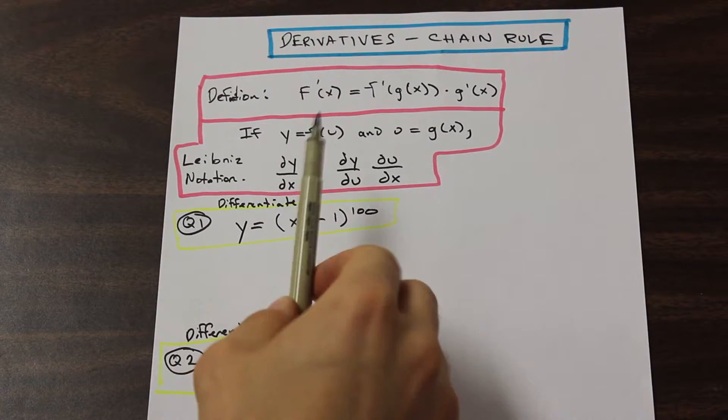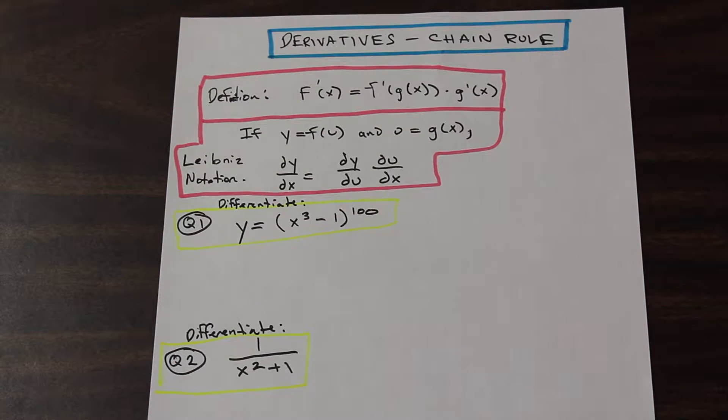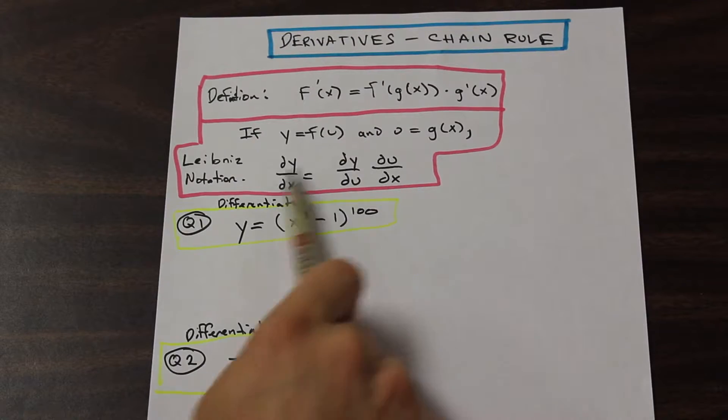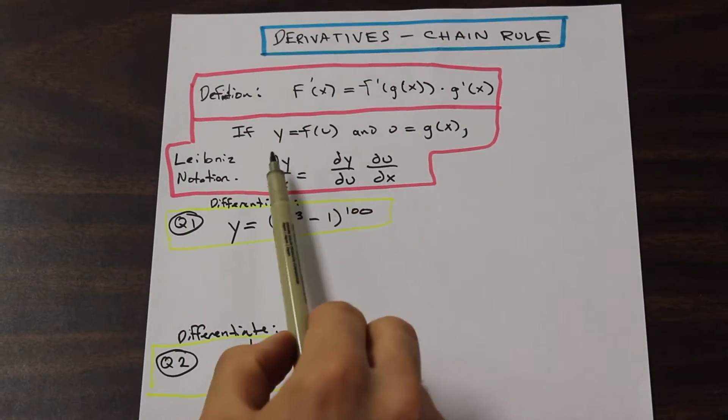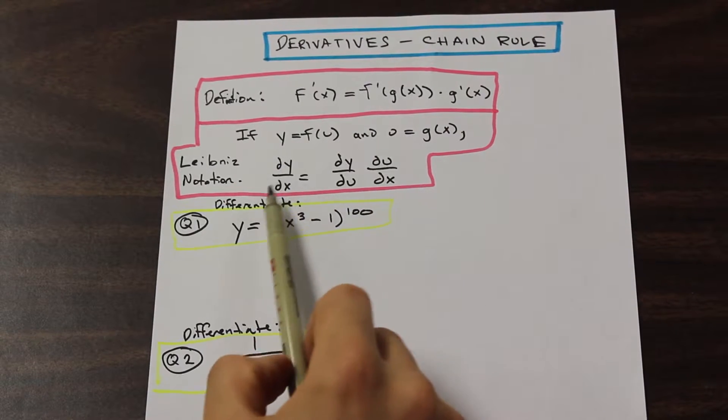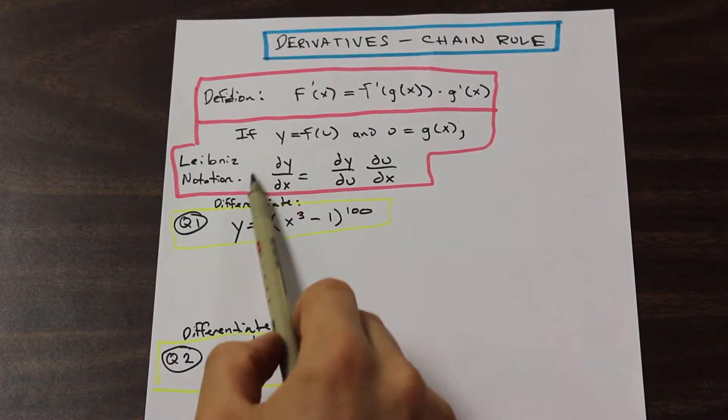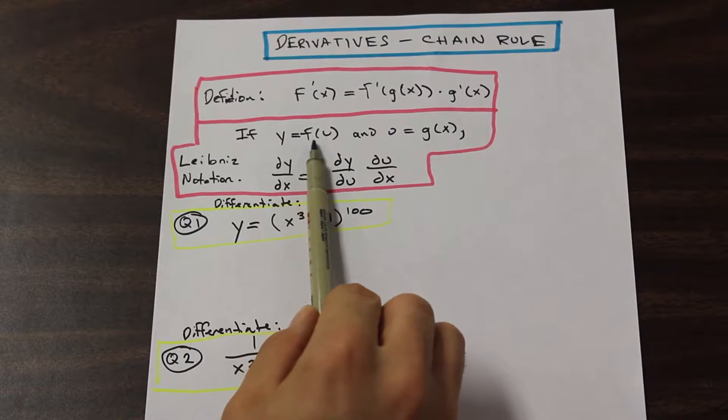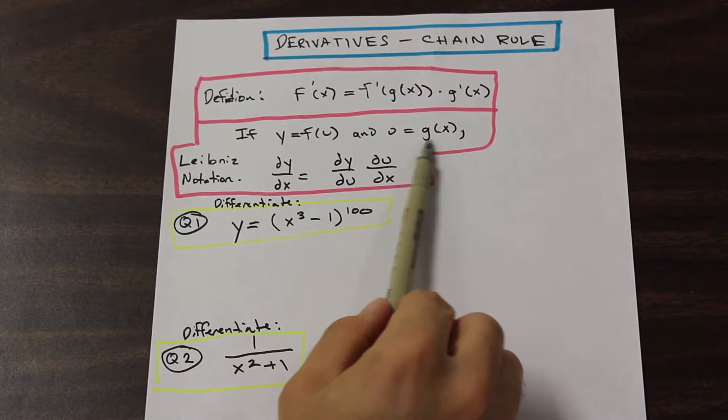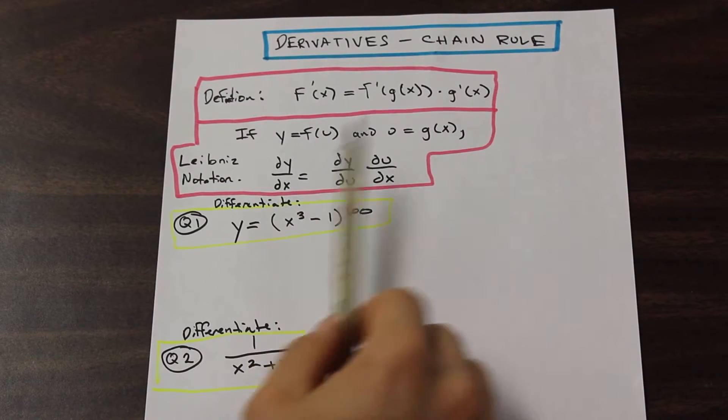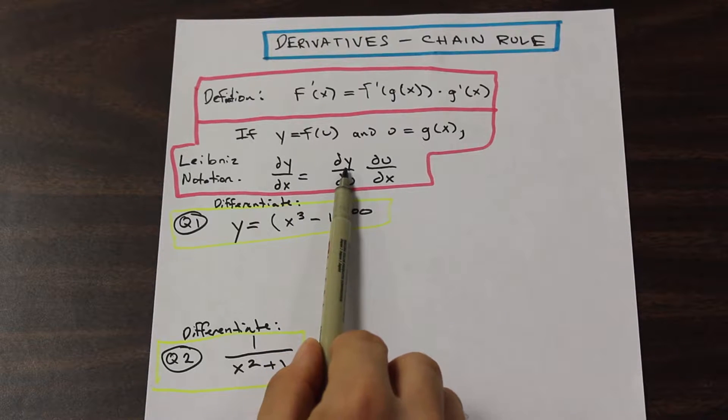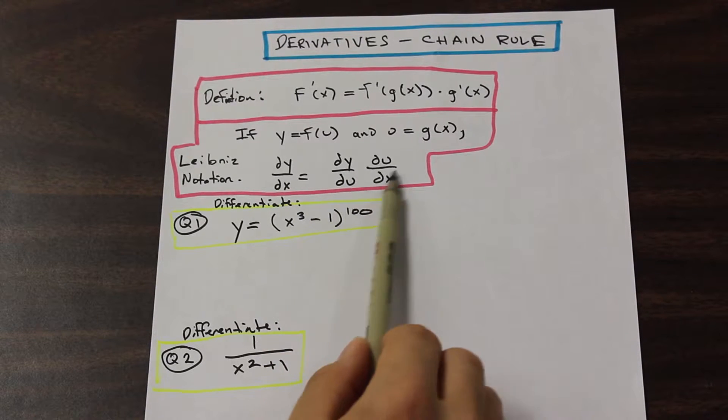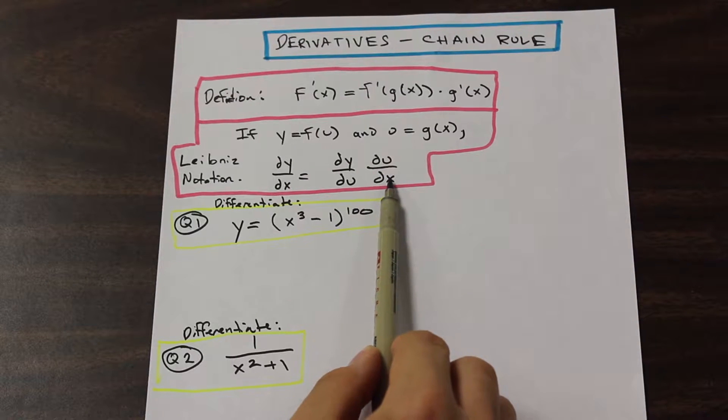So in a different notation called the Leibniz notation, this may be a different way of proving it, but it's good to look at this notation as well, because this will come up. So instead of writing F prime of X or Y prime, we can write DY by DX. That's a different way of writing the derivative of Y with respect to X, so a different way of writing Y prime. So if we say that Y is equal to F of U, and U is equal to G of X, so we substitute G of X for U, we can say that the derivative of Y with respect to X is equal to the derivative of Y with respect to U times the derivative of U with respect to X.